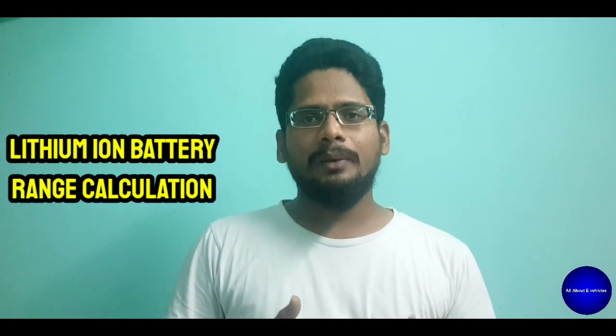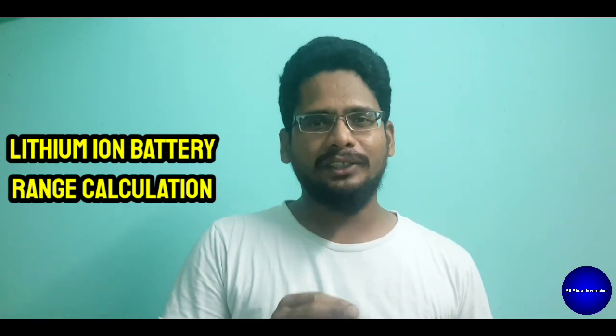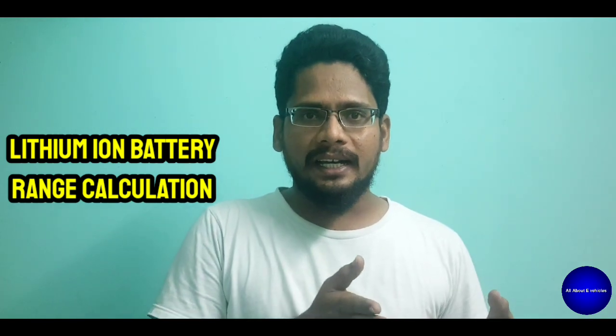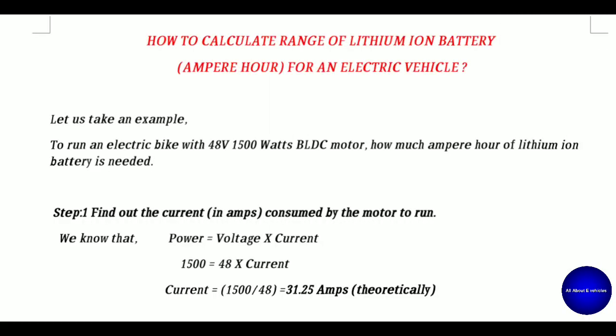In this video, we cover only one page of calculation with three simple steps: what are the basic calculations involved in selecting the lithium-ion battery for a particular motor you have already selected for an electric vehicle. Let us see how to calculate the range or mileage of a lithium-ion battery in terms of ampere-hours, which is the commercial name used for electric vehicle batteries. Let us take an example: to run an electric bike with a 48-volt, 1500-watt BLDC motor that you have already selected, how much ampere-hour of lithium-ion battery is needed to run this motor?